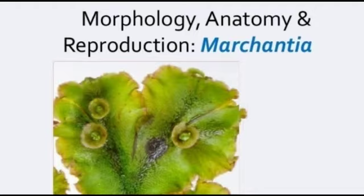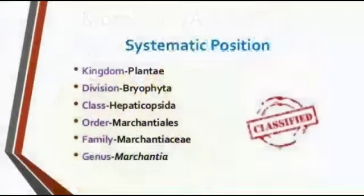Regarding the habit and distribution of Marchantia, it has about 65 species. It can grow in cool, moist, and shady places.